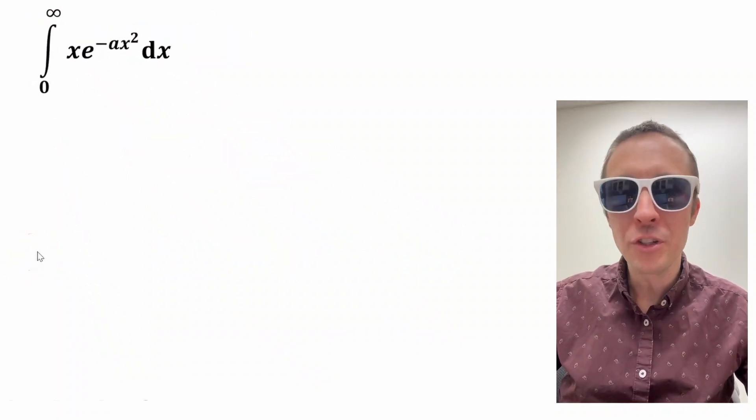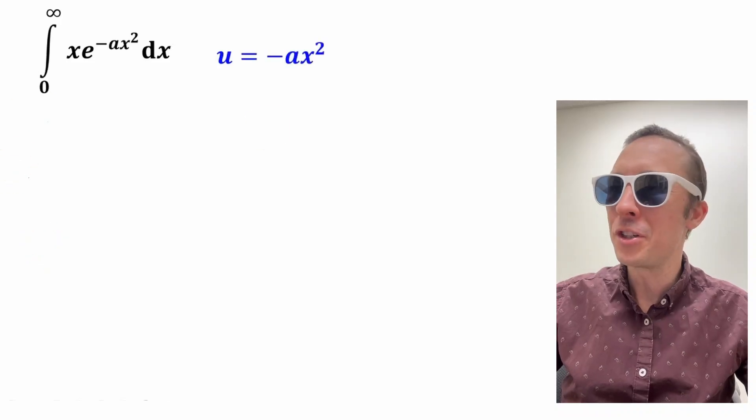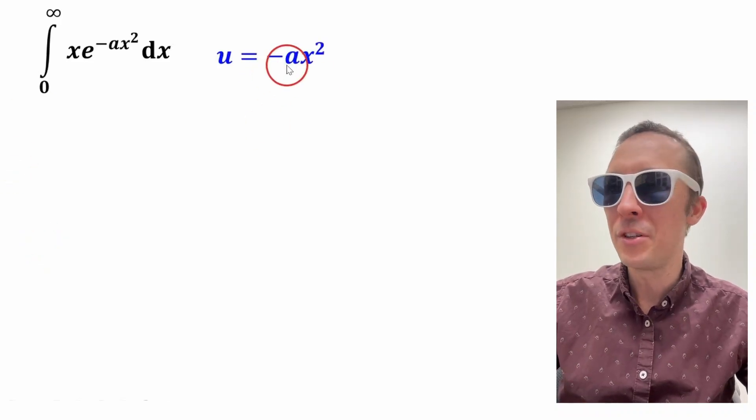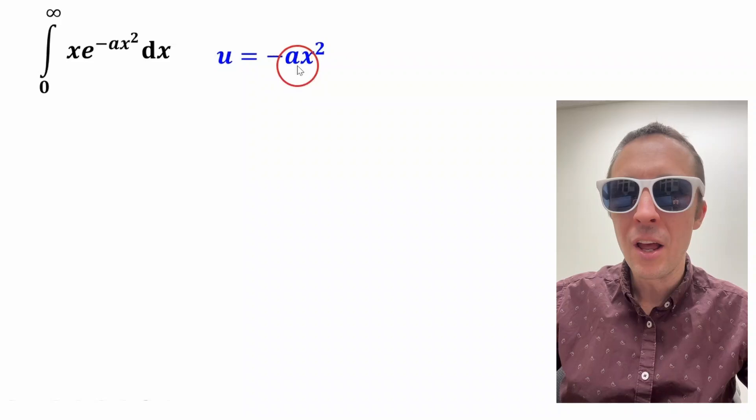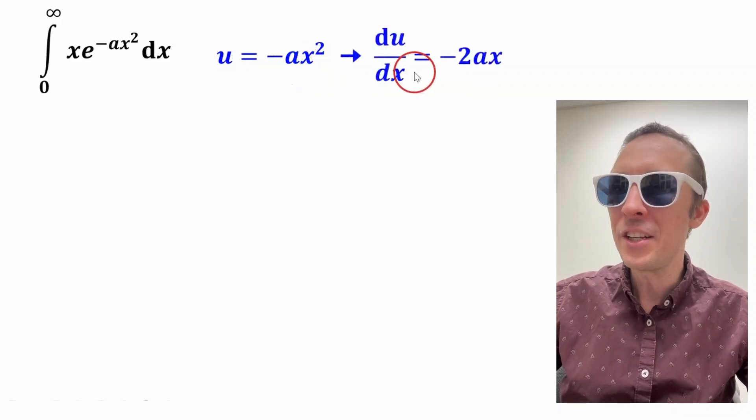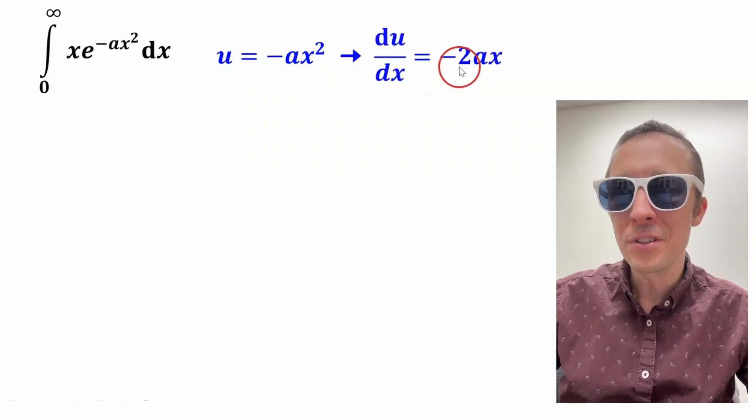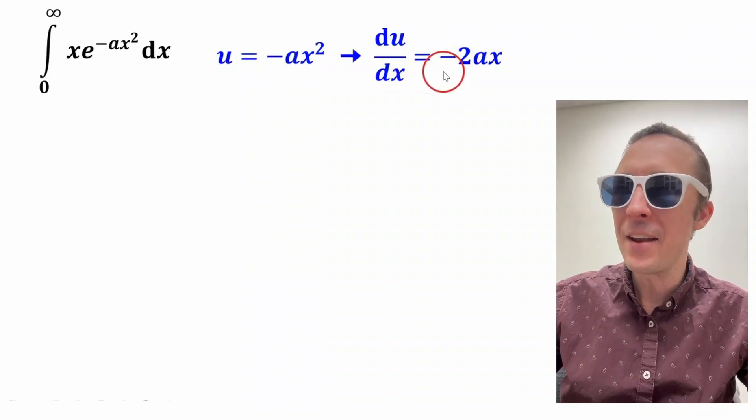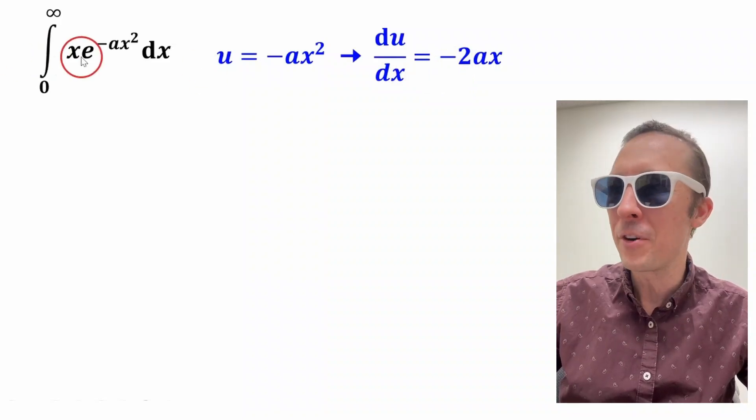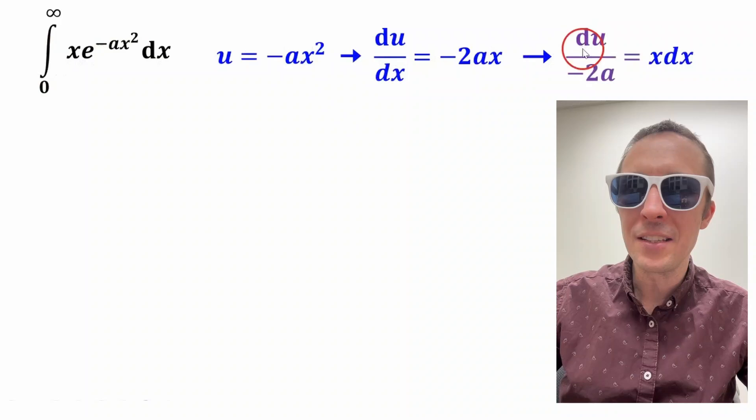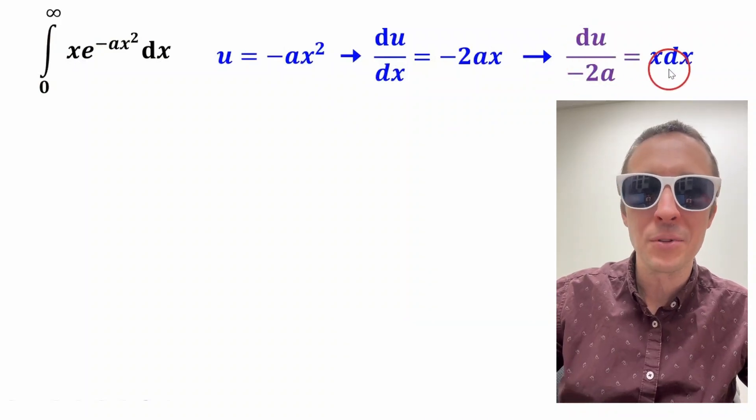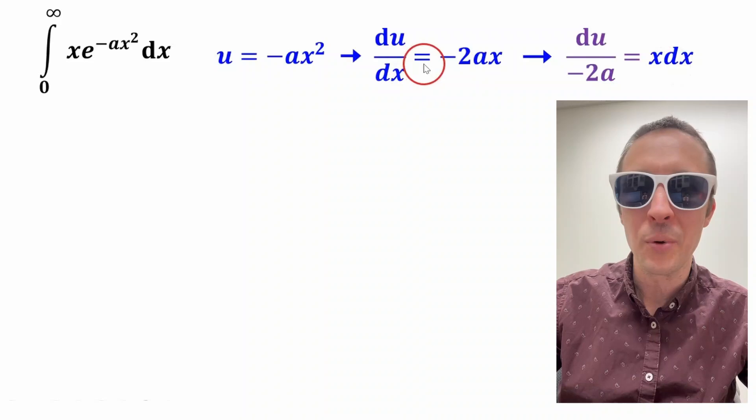This is super short. We're going to do a u substitution where we set u equal to negative ax squared. We'll take the derivative to get du dx equals negative 2ax, and if we rearrange this a little bit for x dx, we get du over negative 2a equals x dx.